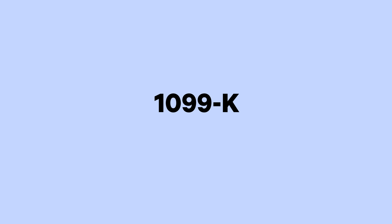Form 1099-K — what is it and who receives it? The 1099-K comes from third-party payment services such as PayPal or Venmo for any transfers or payments made over $600. The $600 threshold is an aggregate, meaning that even if different people send you small amounts of money through PayPal throughout the year, you'll get a 1099-K from PayPal if those payments add up to at least $600.